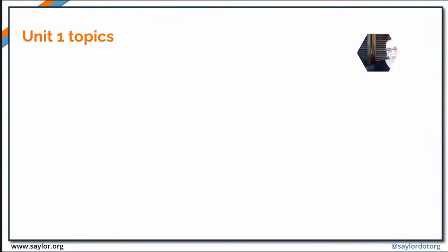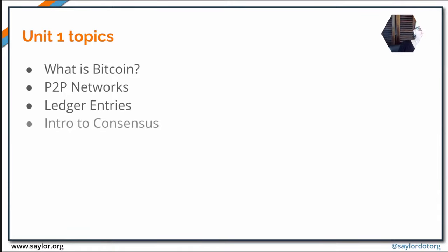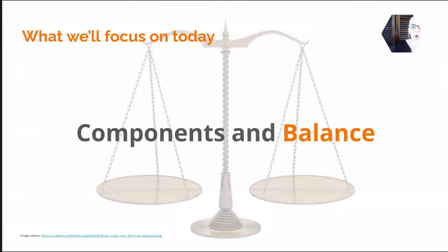This is supplementary material for unit one of the course. The topics in unit one are: what is Bitcoin, peer-to-peer networks, ledger entries, consensus, open systems, decentralization, and balances of power. Today I want to touch on all of these things, but specifically focus on the components of Bitcoin and the balancing act that this whole system does.